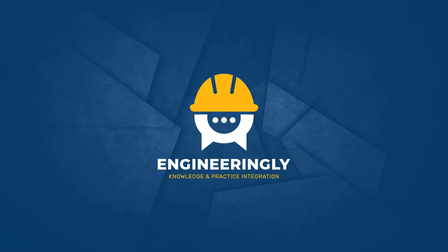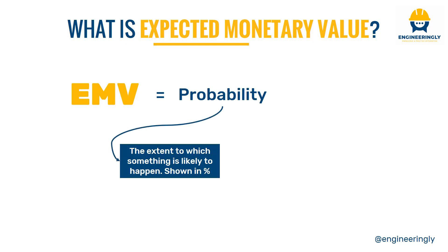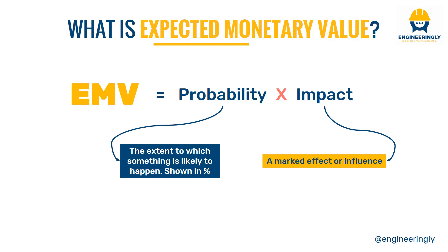In this video we are going to talk about Expected Monetary Value (EMV) and decision tree analysis in project management. EMV is the probability — the extent to which something is likely to happen, usually shown as a percentage — times the impact of the event. The impact is defined as a marked effect or influence, typically shown in currency. Multiplying the percentage by the impact gives you the expected monetary value of an uncertain future event. EMV is used in decision tree analysis.